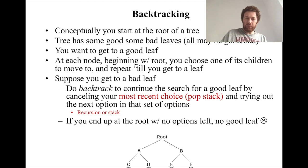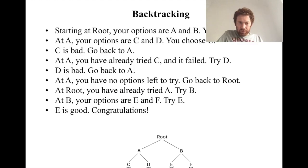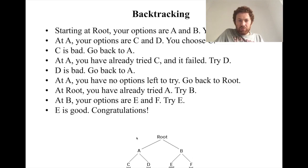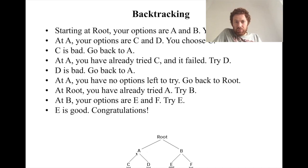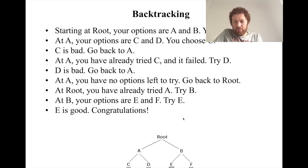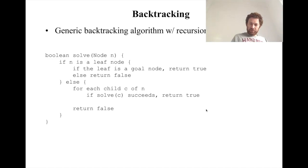Let me show a conceptual example. At the root you have two options: A and B. You choose A; at A your options are C and D. You explore C — it's bad, so go back to A. Then try D — go back to A. At A you have no options left, so you go back to the root and try B. Continue like that.